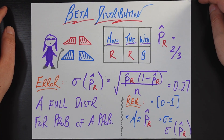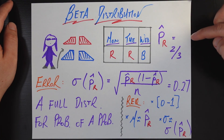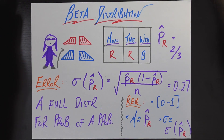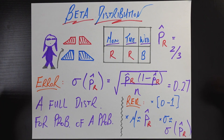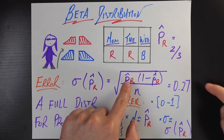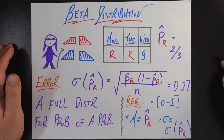Now a couple more days go by in the course, and you learn about this thing called the error associated with the sample proportion. You learn that this thing is called a point estimate — just a single answer to the question of what's the probability the professor would wear red shoes. But you can actually do better; you can come up with a standard deviation around this point estimate. You learn that the standard deviation is the square root of the sample proportion times 1 minus that sample proportion, all divided by the number of samples, which in this case is just three days so far.